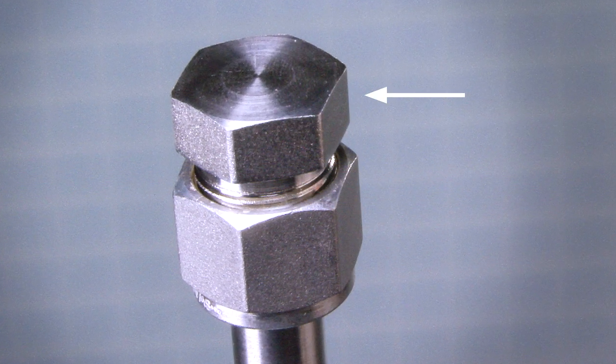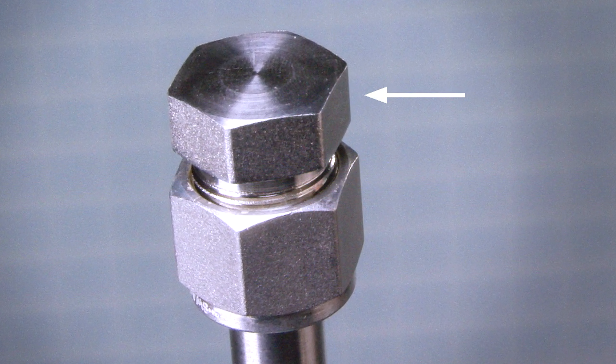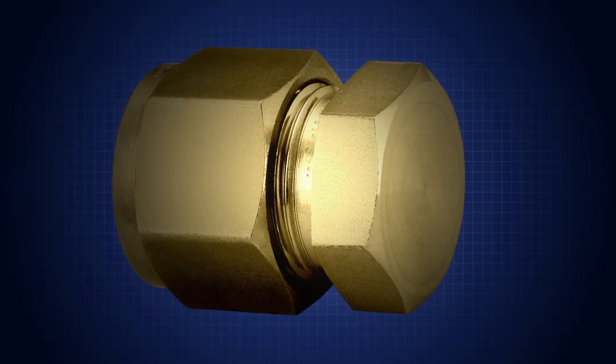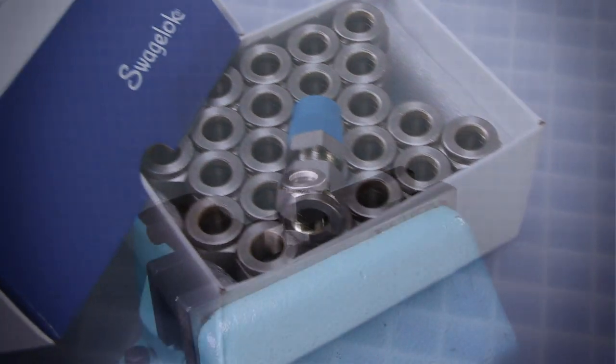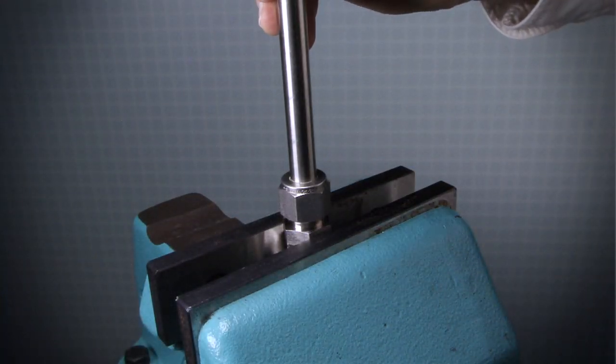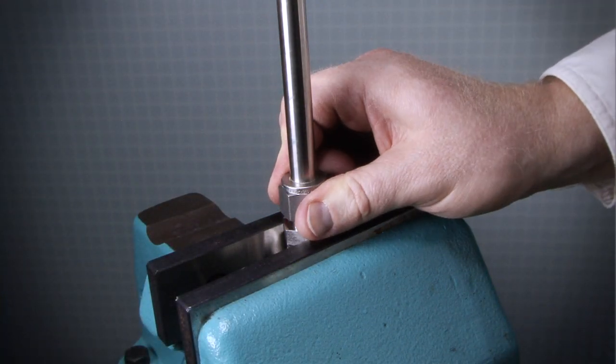Swagelok caps can be used to block off the end of a tube run when desired. Caps are installed using the installation instructions for a Swagelok tube fitting. Fully insert the tube into the fitting and against the shoulder. Rotate the nut finger tight.